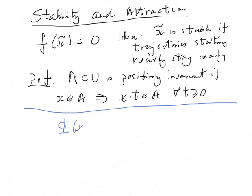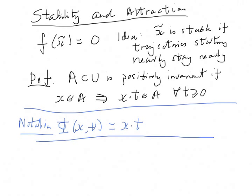phi of x and t will often be written as x dot t. So this is standard notation and notation that I will use repeatedly. I apologize that it sort of usurps the notation for dot product, but that's life, that's what is done. So this says that you flow forward from time x forward time t, and that that stays inside A, so that is positively invariant.